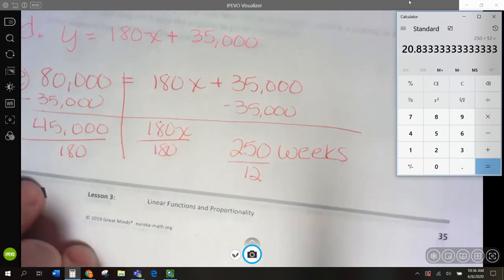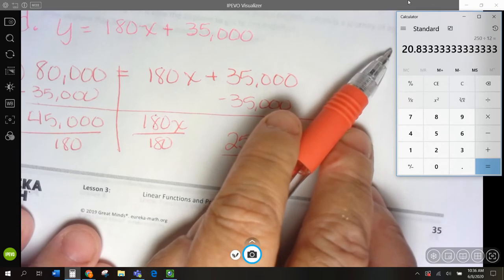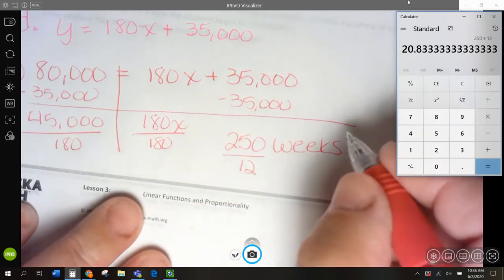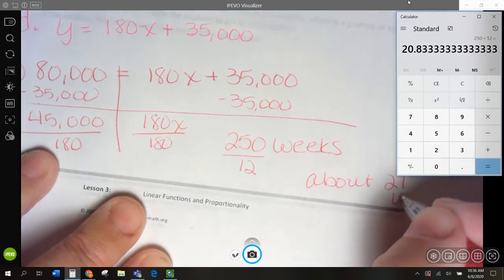And we're going to get 20.8. 20.8, I'm going to round to be 21. So, about 21 years. It's a long time.